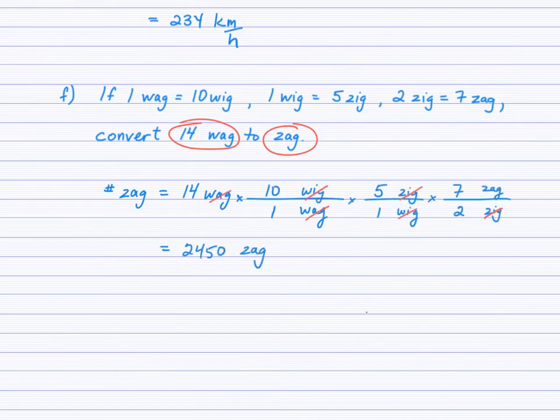Okay, so now you see here that I took WAGs and went to Wigs, then Wigs to Zigs, and Zigs to Zags. And as all the units cancel, I finish with Zags. And so here we go, 14 times 10 times 5 times 7, divided by 1, which you don't need to punch in, divided by 1, divided by 2. So I'll just write that out to show you that I did 14 times 10 times 5 times 7 divided by 2 equals. So basically, when a number is in the numerator of the conversion factor, you're going to multiply, and when it's in the denominator, you're going to divide.